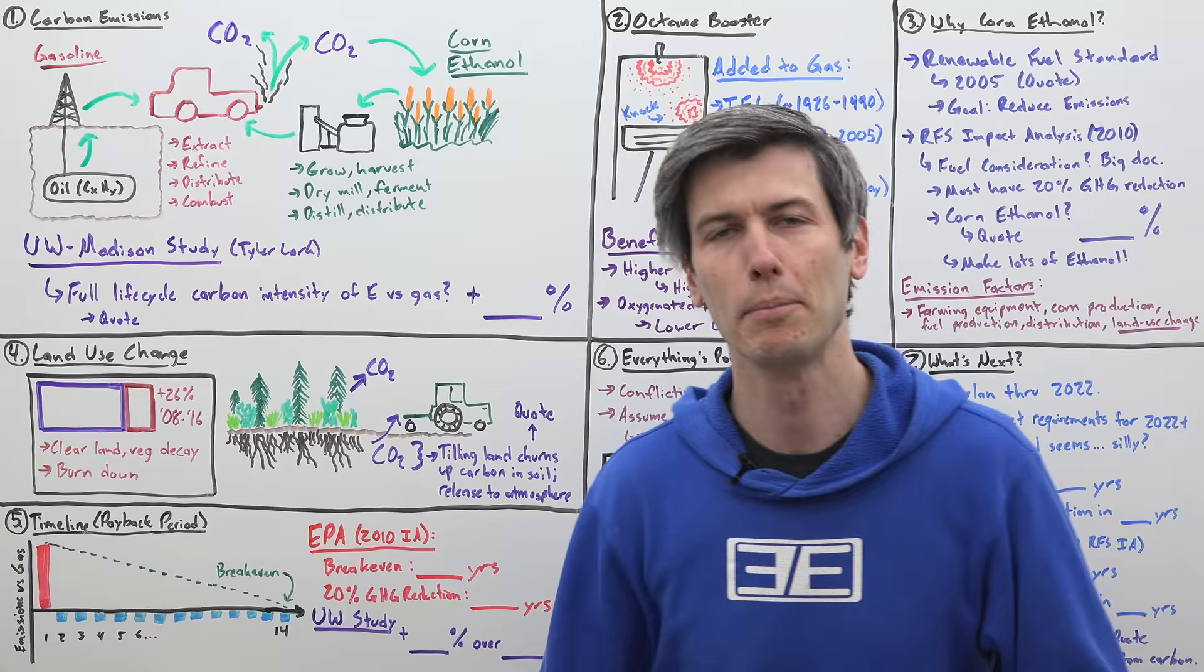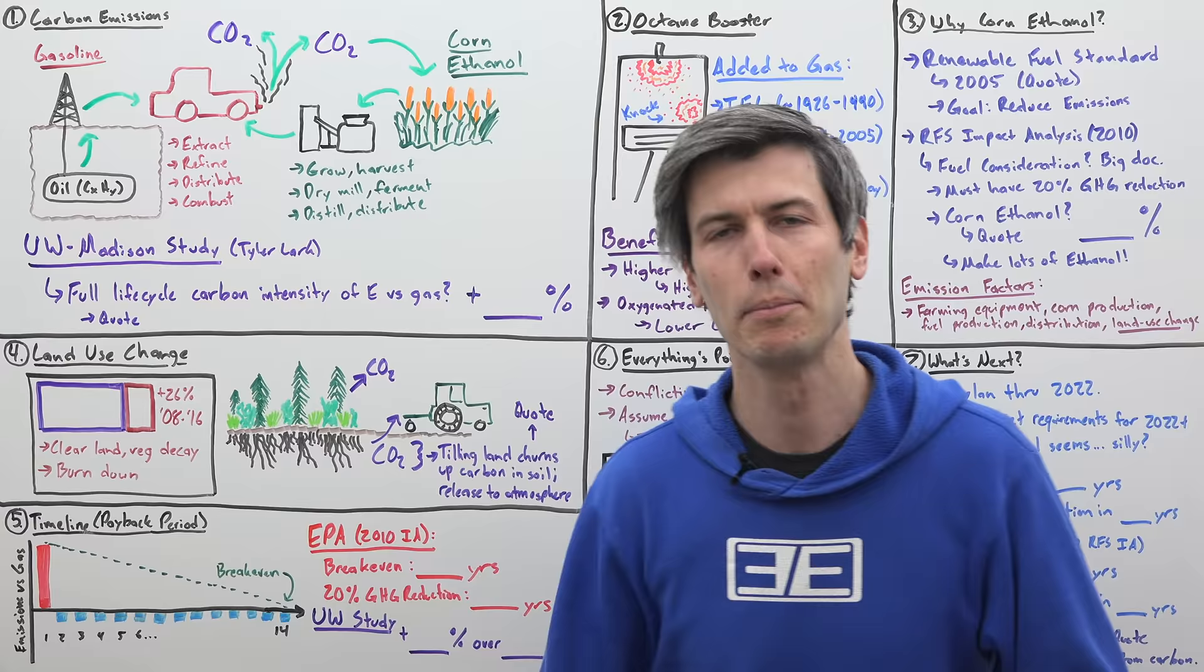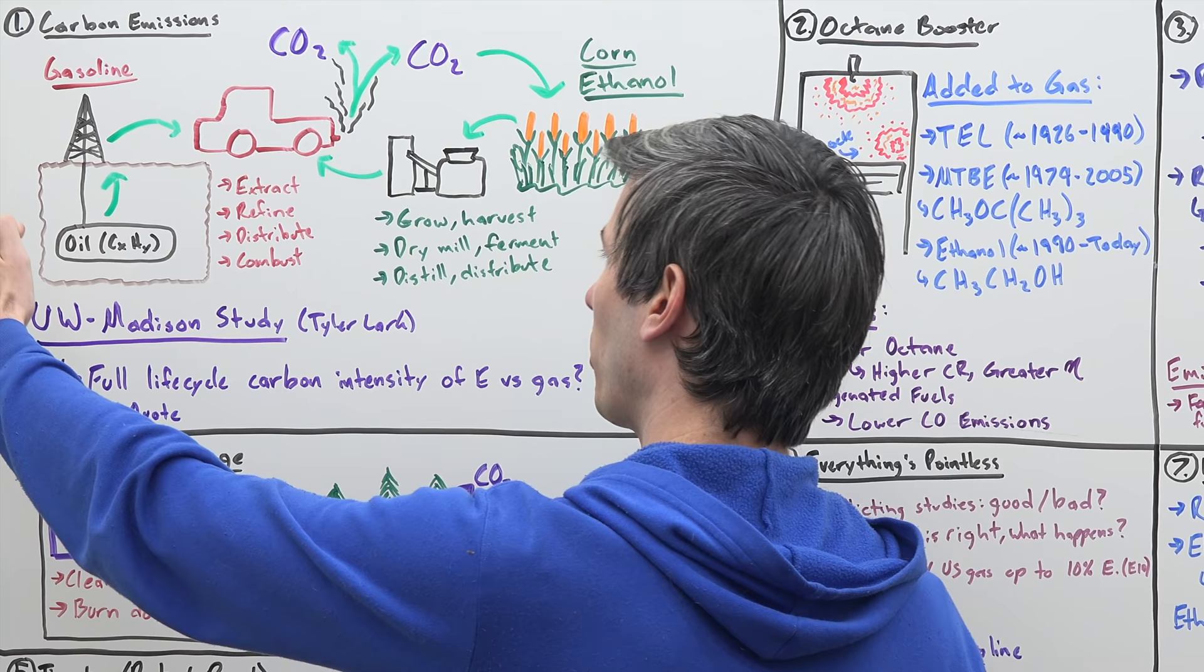Now the premise of corn-based ethanol is that it's a renewable fuel, meaning the carbon footprint of that fuel is much smaller than say gasoline itself. Where does this logic come from? Well, it's pretty straightforward.